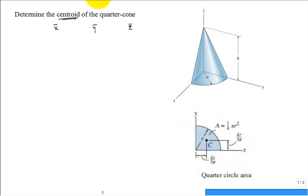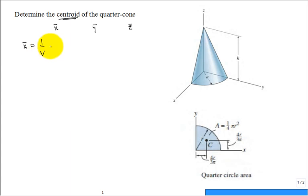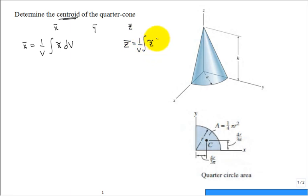What's the formula to calculate x̄? It would be one over the volume, times the integral of x̃ dV, where x̃ is the local centroidal x-location of a little volume element dV. Similarly, z̄ would be one over the volume times the integral of z̃ dV. Since x̄ equals ȳ by symmetry, we only need to calculate x̄ and z̄.